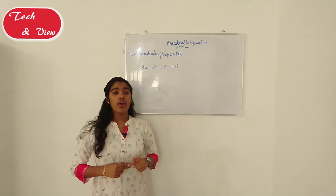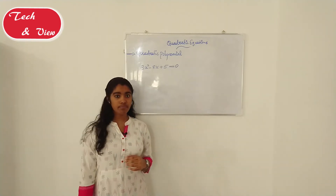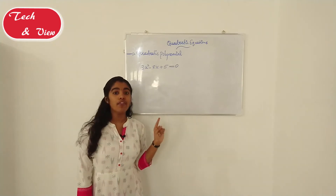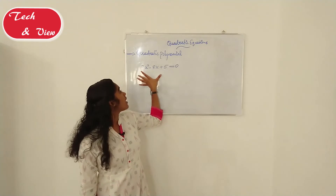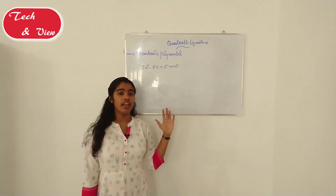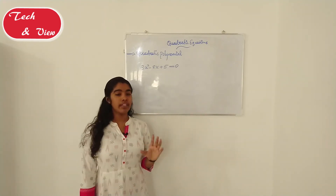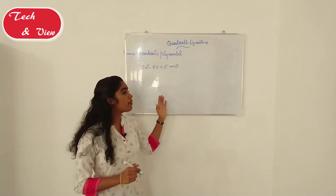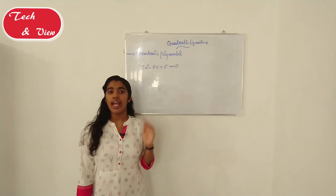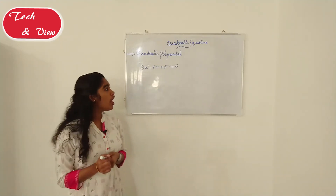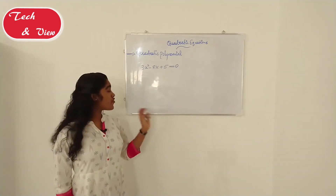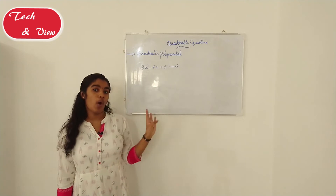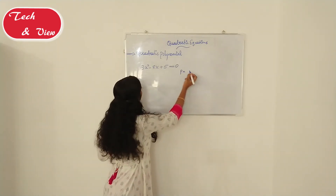Here we are going to learn how to factorize the quadratic equation. We will use the product-sum method to find the factors. The product is found by taking the coefficient of x squared and multiplying it by the constant term. The product is equal to 15.